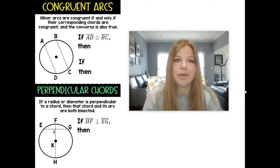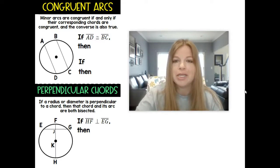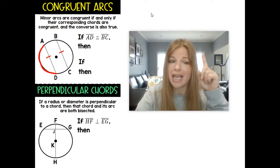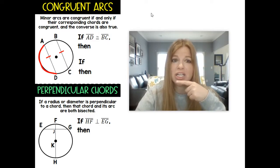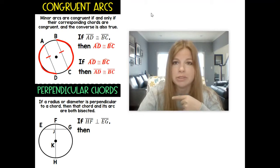First thing says, minor arcs are congruent if and only if their corresponding chords are congruent, and the converse is also true. So let's take a look here. If those two chords were congruent, if AD is congruent to BC, then that arc AD is congruent to arc BC. And the converse is true: if the two arcs are congruent to each other, then those two chords are going to be congruent to each other. Pretty simple comparison back and forth.